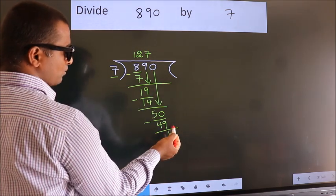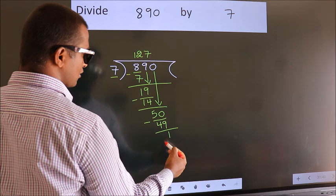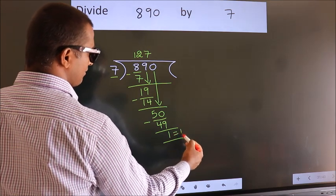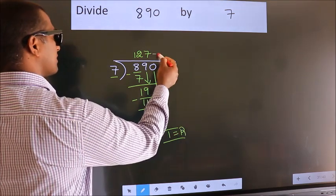No more numbers to bring down. So we stop here. This is our remainder. This is our quotient.